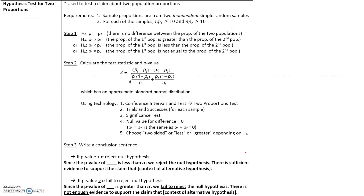Let's talk about the hypothesis test for two proportions. This is used to test a claim about two population proportions. First step, we need to list our null and our alternate hypothesis. Our null hypothesis is that the two population proportions are equal, or that there is no difference between the proportion of the two populations. If our alternate hypothesis is that P1 is greater than P2, then the proportion of the first population is greater than the proportion of the second population. The same applies for less than or not equal to.